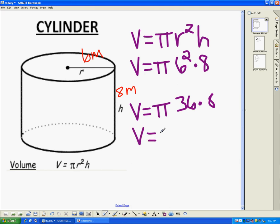Now we're going to multiply 36 times 8, and we get 288. So the answer is 288 pi, and because it's volume, it's cubic meters. So that's how many cubes that are 1 meter by 1 meter by 1 meter, 288 pi cubes, would fit inside a cylinder of these dimensions.